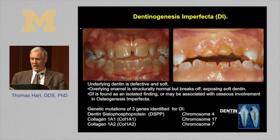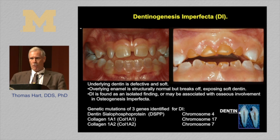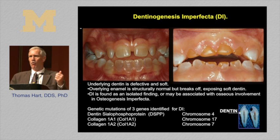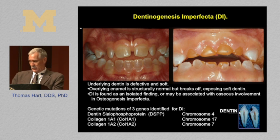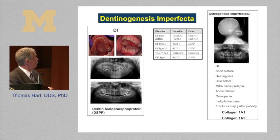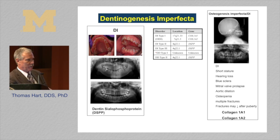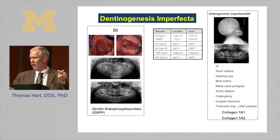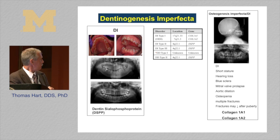Now I'm going to speak about dentinogenesis imperfecta, again along our theme of how genetics helps us understand what's happening. Dentin is made up of three primarily organic molecules: dentin sialophosphoprotein (DSPP) and collagen 1A1 and collagen 1A2, coded for on different genes. Genetic mutations of any one of these can cause dentinogenesis imperfecta — abnormal development of the dentin. There are a number of classifications of DI that have developed over the years.